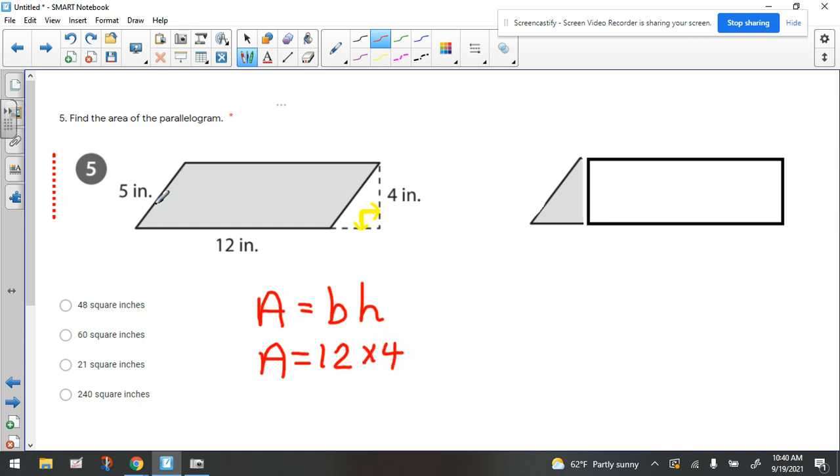Now, why is 5 not the height? The reason why 5 is not the height, if you look at this angle, I'm just going to trace the angle in blue, that's not a right angle. That's an acute angle. So therefore, we cannot use it as the height.